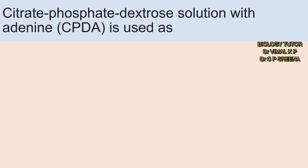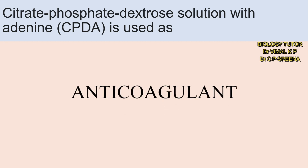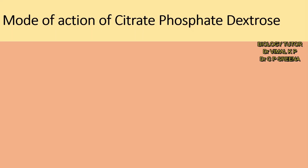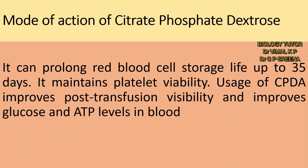Citrate phosphate dextrose with adenine (CPDA) is used as an anti-coagulant. These three anti-coagulants are used in blood banks. Mode of action of citrate phosphate dextrose: It can prolong red blood cell storage life up to 35 days. It maintains platelet viability. Usage of CPDA improves post-transfusion viability and improves glucose and ATP levels in blood. You should remember these points for your exams.